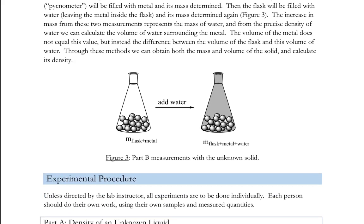In Part B, we will determine the density of a metal. The metal, unlike the liquid, doesn't occupy the full volume of the flask. So we have the dry flask, we put the metal in it, and we determine the mass of the flask and metal. We had the mass of the flask from earlier, so that will allow us to calculate the mass of just the metal.